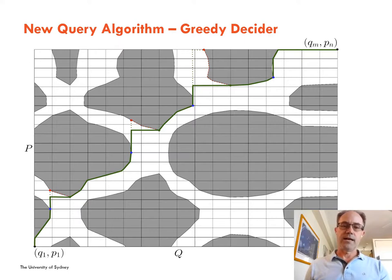Now we'll give a couple of highlights on our best proposed query algorithm. The first idea greedily searches a free space diagram in contrast to Alt and Godau's dynamic program. The greedy decider traverses the free space diagram on the fly, mostly along free space boundaries up and to the right.